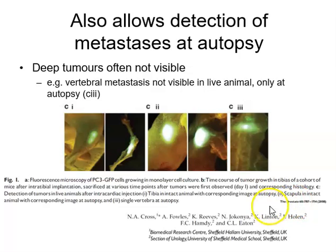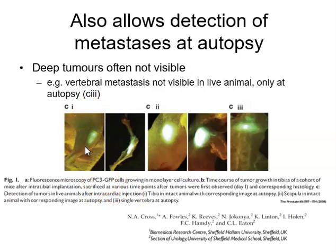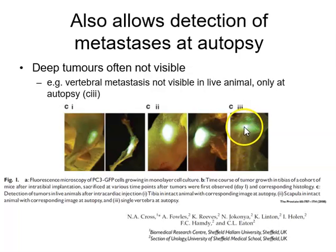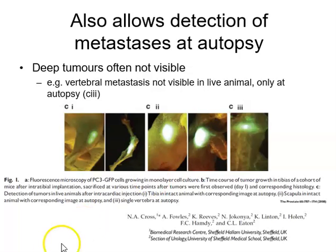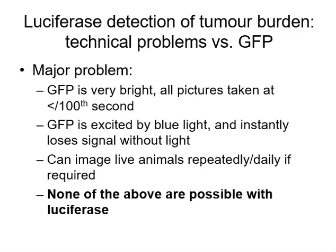This work was published, and we also used the model to look for distant metastases after tail vein or intracardiac injection. When tumour cells were injected into the left ventricle, tumours lodged in the bone marrow, in the shoulder blade, and in individual vertebrae. Without GFP in the tumour cells, we would never have found a tumour in a specific vertebra. In vivo imaging allowed us to visualise exactly where tumours had lodged, and then generate cell strains that selectively invaded bone — which was the core focus of the project.